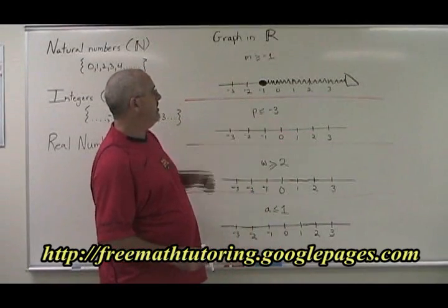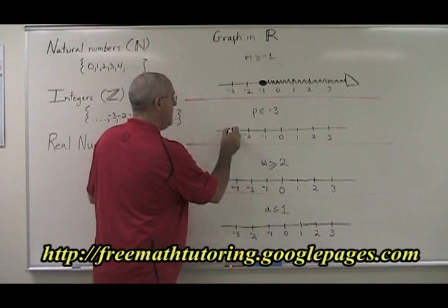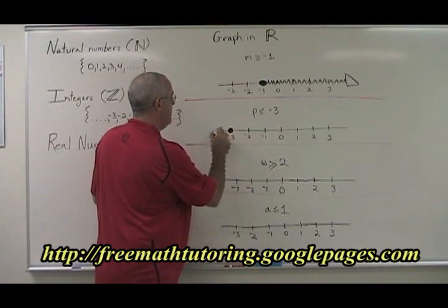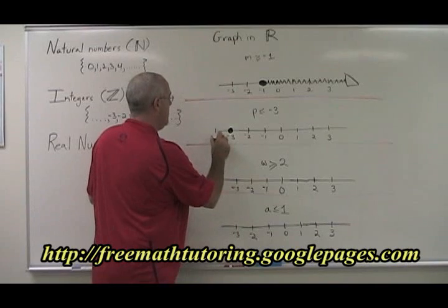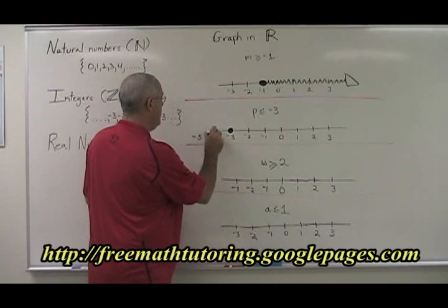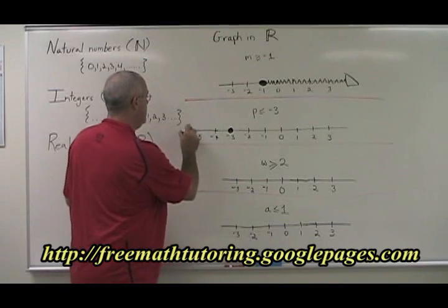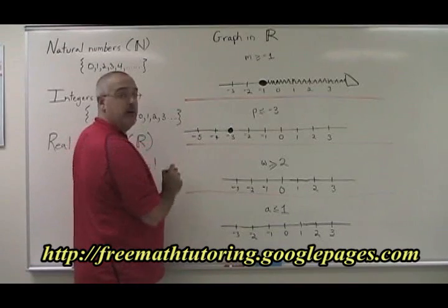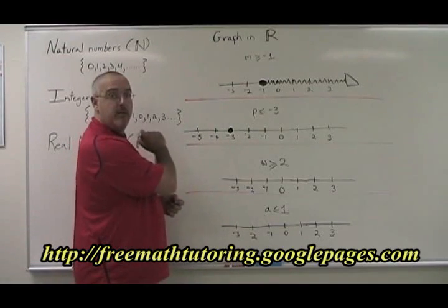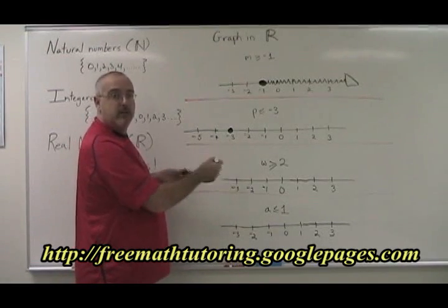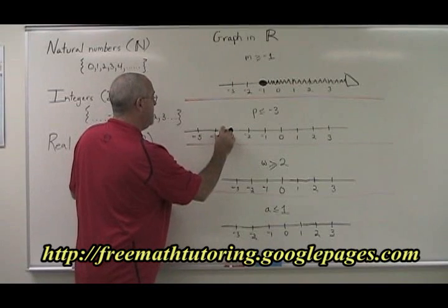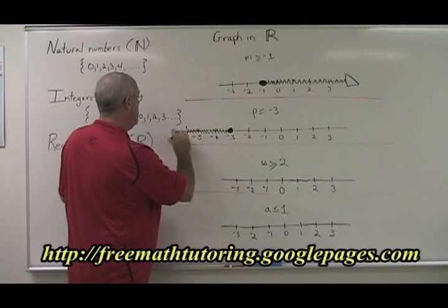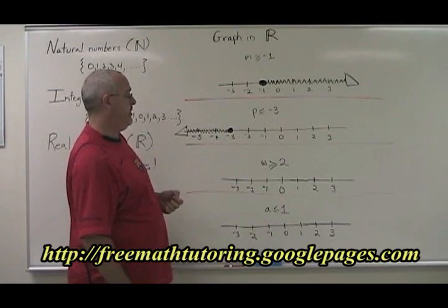P less than or equal to negative 3. Negative 3 is equal to negative 3, so it's in the answer. And then negative 4 and negative 5 are also less than negative 3, so they will be in the answer too, along with all the other negative numbers, including the decimals and fractions. So we use shading to show it going on forever in the negative direction.